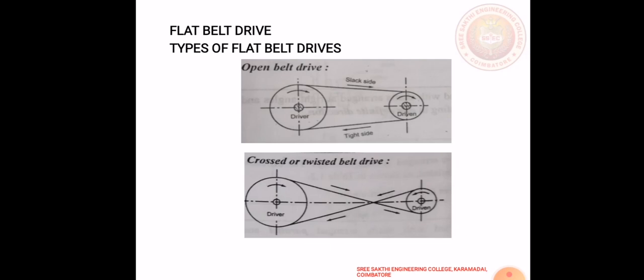Next is crossed or twisted belt drive. In a crossed belt drive, the shafts are arranged in parallel and the twisted arrangement makes the pulleys rotate in opposite directions. The speed is limited to 15 meters per second. To avoid excessive wear, both sides of the belt get contact with the pulleys. Crossed or twisted belt drive arrangements are not advisable for V-belt and timing belt drives.